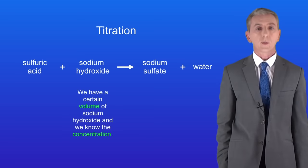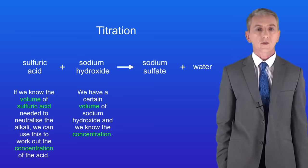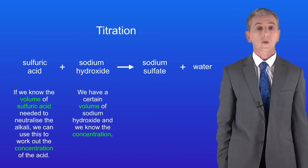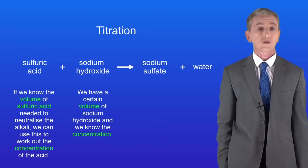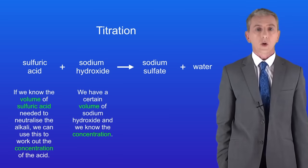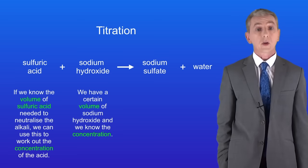Imagine that we have a certain volume of the alkali sodium hydroxide and we know the concentration. If we know the volume of sulfuric acid that we need to neutralize the alkali we can use this to work out the concentration of the acid. Now this sounds tricky but titrations are actually quite straightforward. In the next video we look at the calculations. In this video we're going to look at the stages involved in the titration and I'd recommend that you learn these stages.